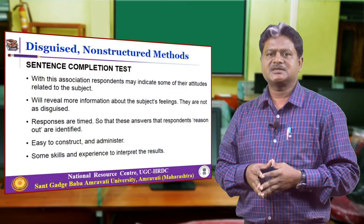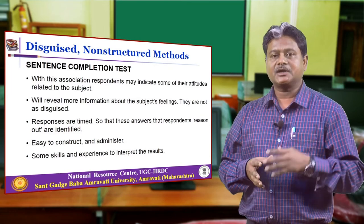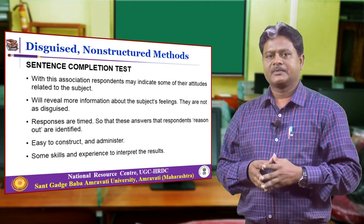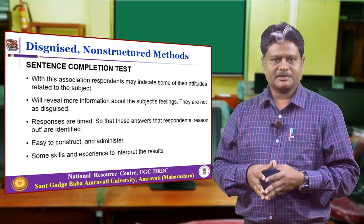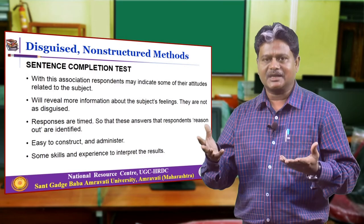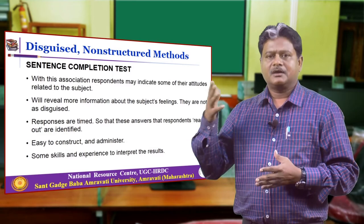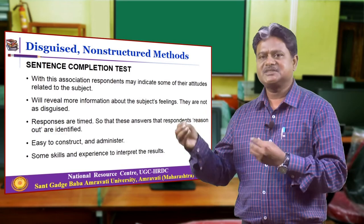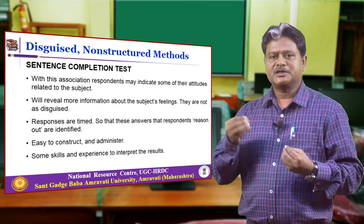Another method is the sentence completion test, where respondents are presented with a number of incomplete sentences. Respondents are asked to complete the sentence with the first idea that comes to their mind, and again, as with the word association test, we are not asking respondents to write the answer. This may reveal attitudinal elements related to the subject and the respondent's inner feelings, though it is not as disguised as the word association test. Responses again have to be timed. This test is easy to construct and administer, but skill and experience are needed to interpret the results.